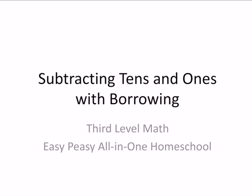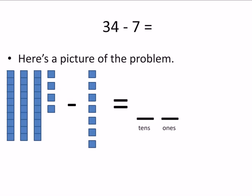Subtracting 10s and 1s with borrowing. 34 minus 7. Here's a picture of the problem.